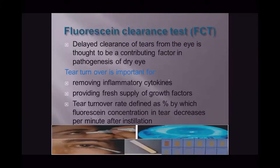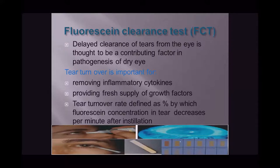The fluorescein clearance test assesses tear turnover. Delayed clearance of tears is thought to be a contributing factor in the pathogenesis of dry eye. Tear turnover is important for clearing inflammatory cytokines and providing a fresh supply of growth factors. The tear turnover rate is defined as the percentage by which fluorescein concentration in tears decreases per unit time after instillation.